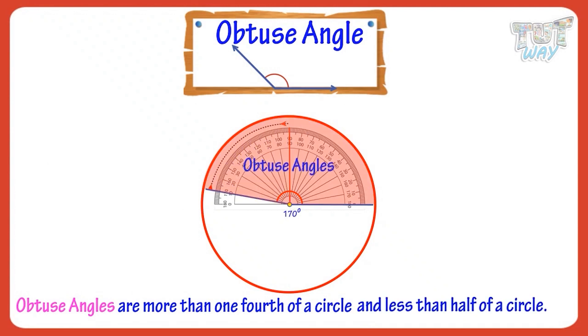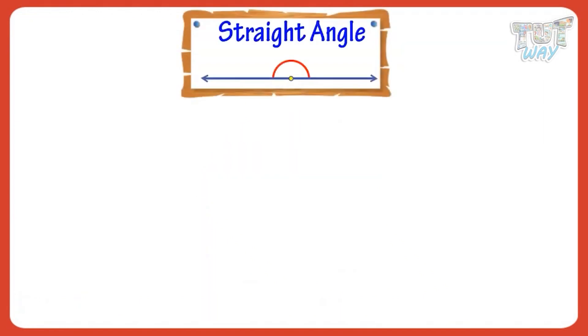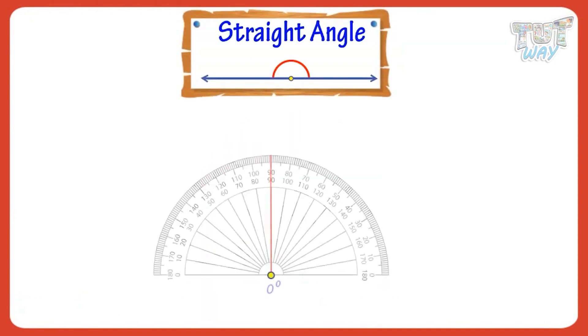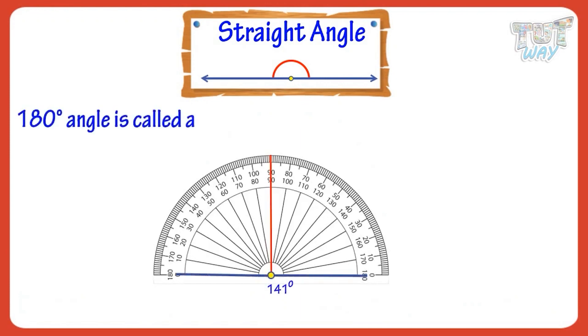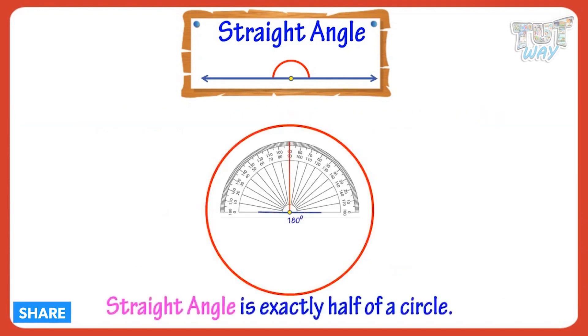Now let's see what is a straight angle. A 180 degree angle is called a straight angle, as it's a straight line. So straight angle is exactly half of a circle.